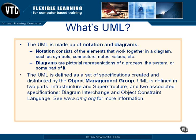Where does the UML come from? It's defined as a set of specifications created and distributed by the Object Management Group, the OMG. UML is defined in two parts, infrastructure and superstructure, and two associated specifications, diagram interchange and object constraint language. You can download these specifications at the Object Management Group's website, www.omg.org.